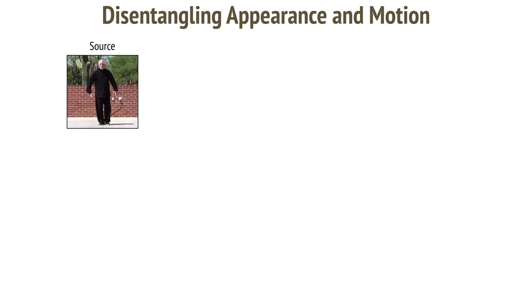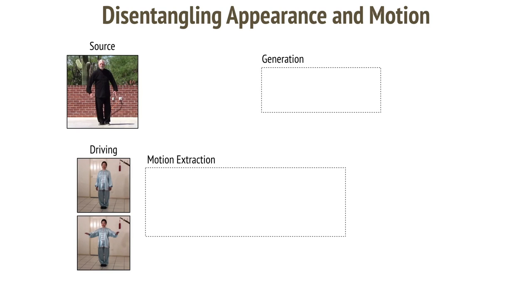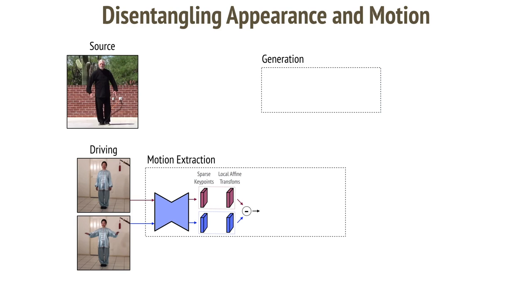We start with a source image and a driving video. We split the process into motion extraction and generation. To extract motion, we pass the consecutive frames of the driving video through an unsupervised keypoint detector to obtain sparse keypoints for each frame. Additionally, for each keypoint, we obtain local affine transformations in the neighborhood of that keypoint. To get motion, we subtract the two outputs. We call this sparse motion, since it is based on a sparse set of object keypoints.